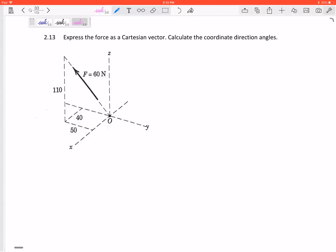All right, let's look at this example where we've got a 60 Newton force and we want to express the force as a Cartesian vector. We want to break it up into its components, then we're going to calculate the coordinate direction angles.